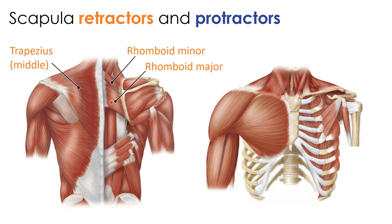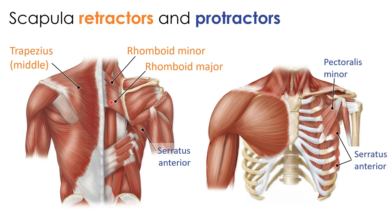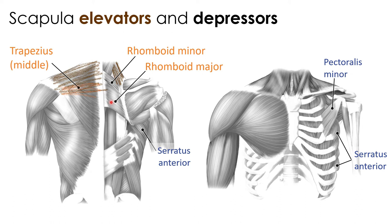For scapula protractors, the two muscles that protract the scapula are the serratus anterior — visible from both posterior and anterior views — and the pectoralis minor. The completed color-coded diagram shows the pattern clearly: scapular elevators are posterior and superior; retractors are posterior and all originate from the vertebral column; protractors run along the lateral edge and wrap around to the anterior side.